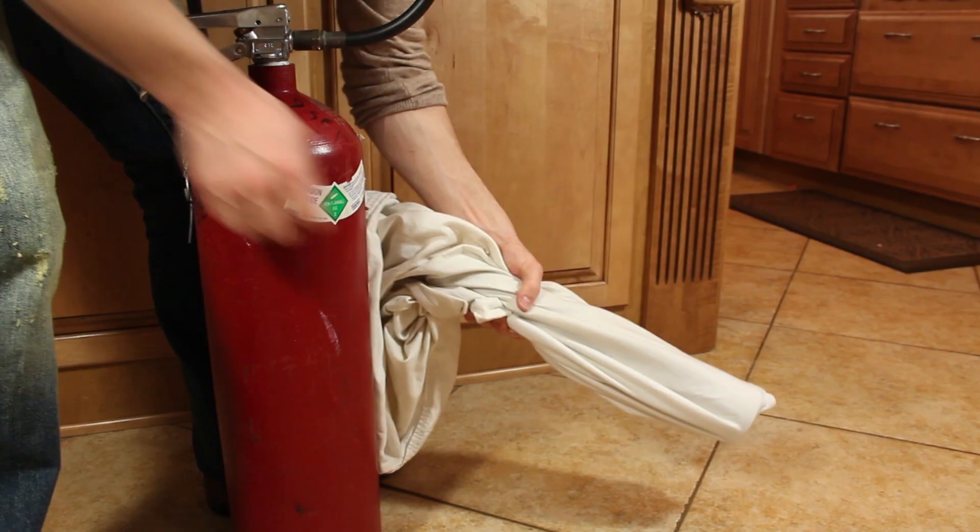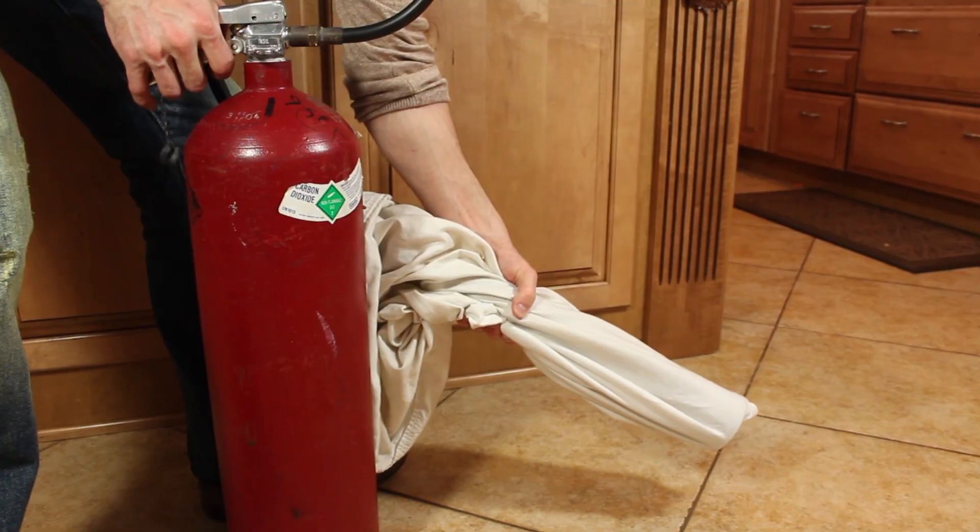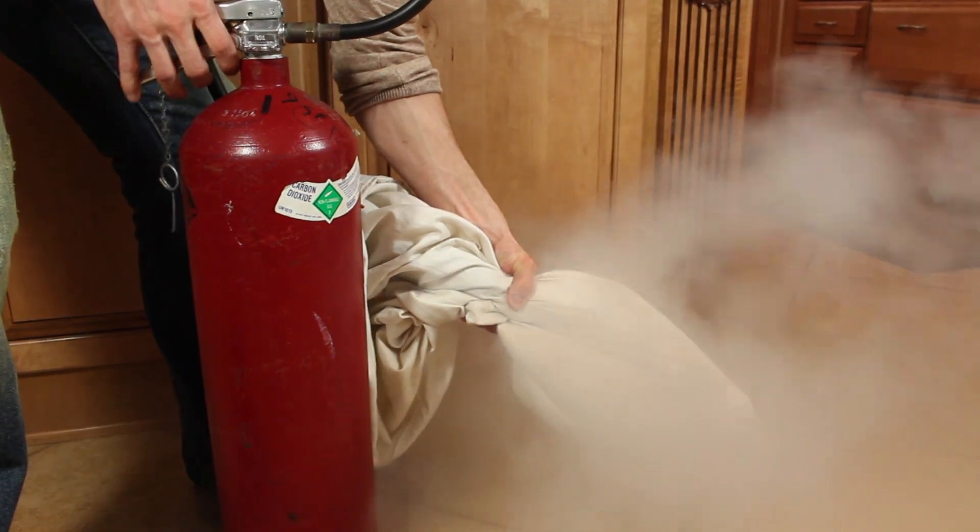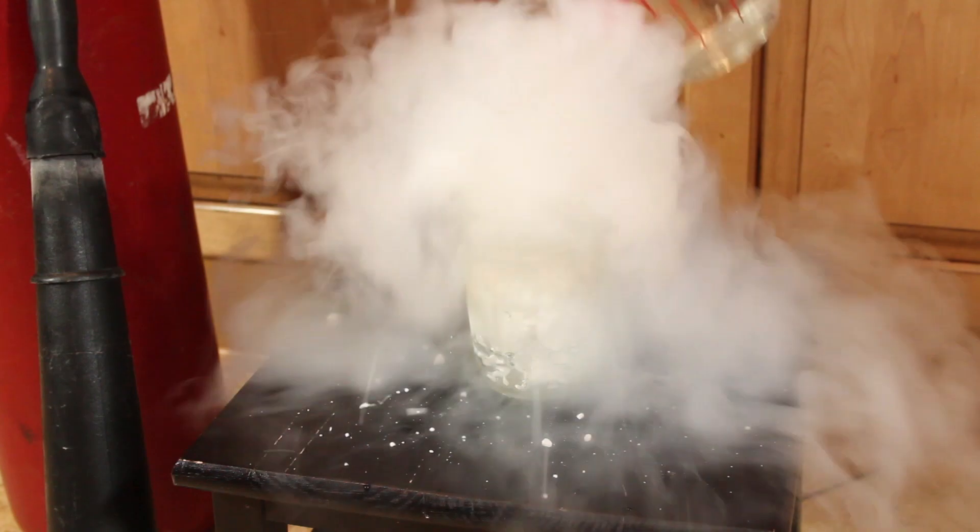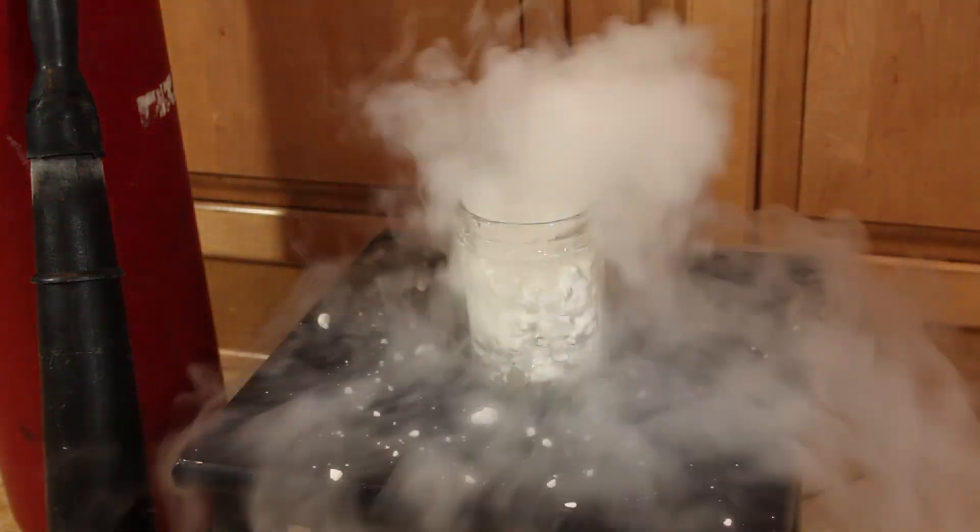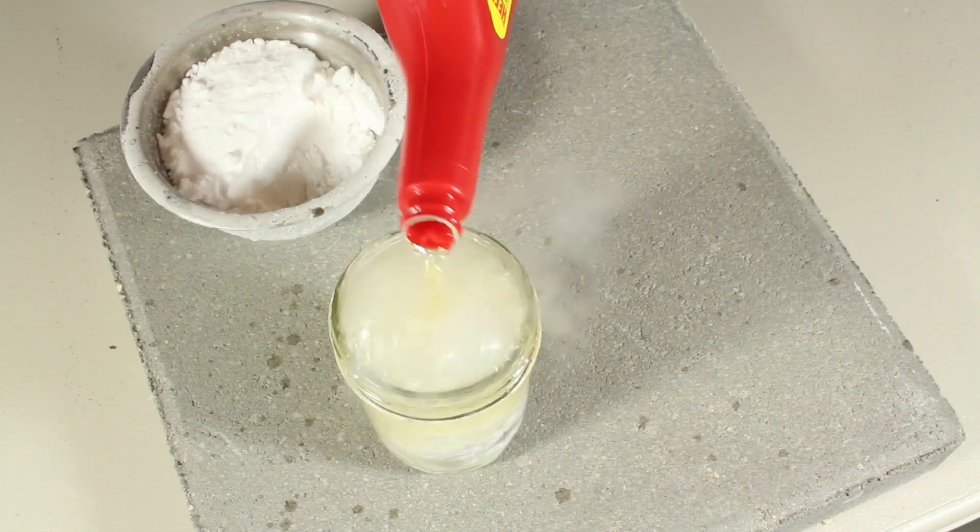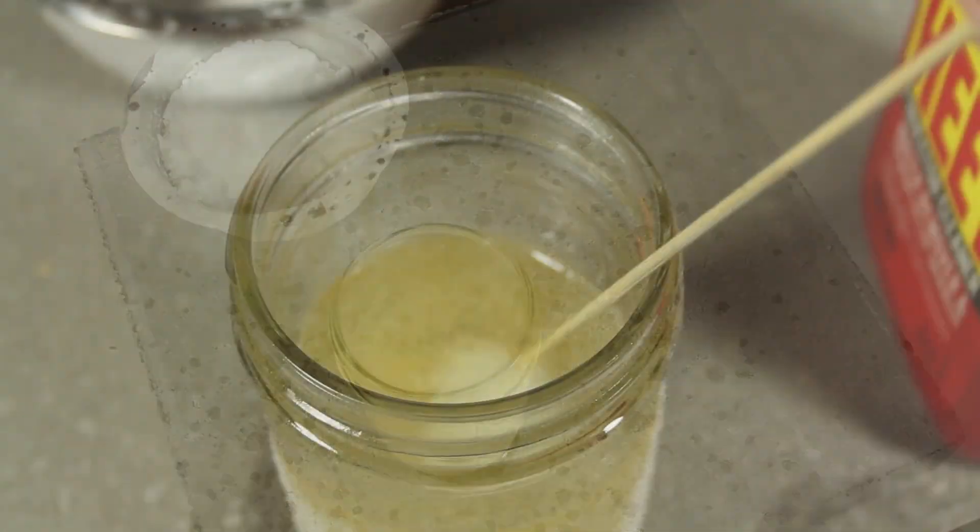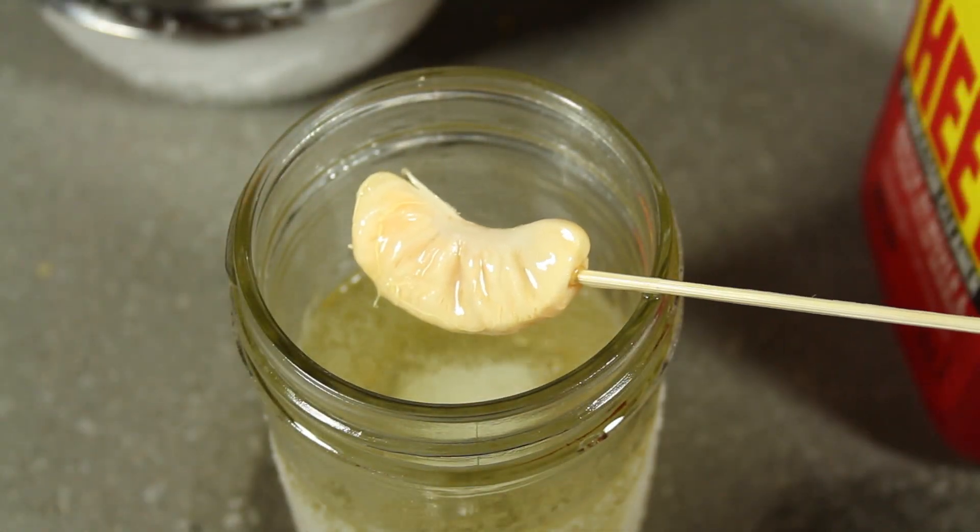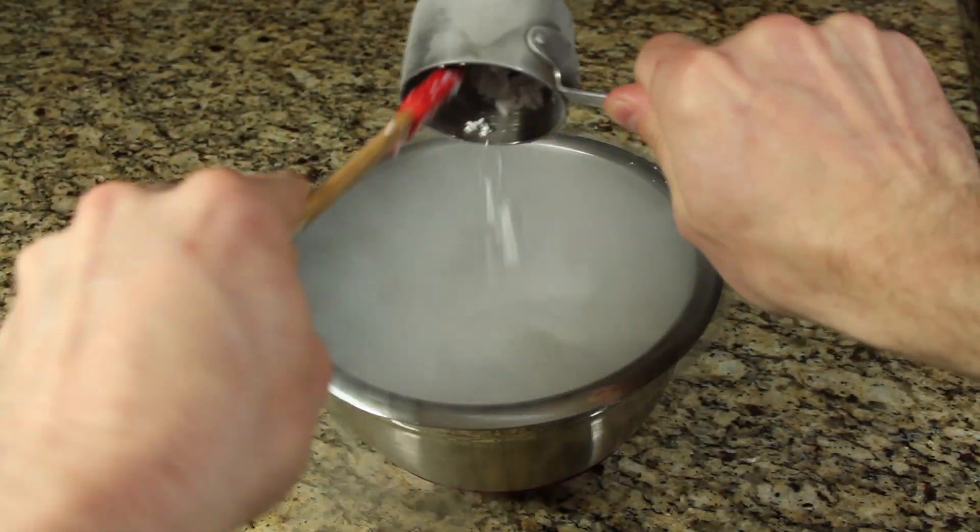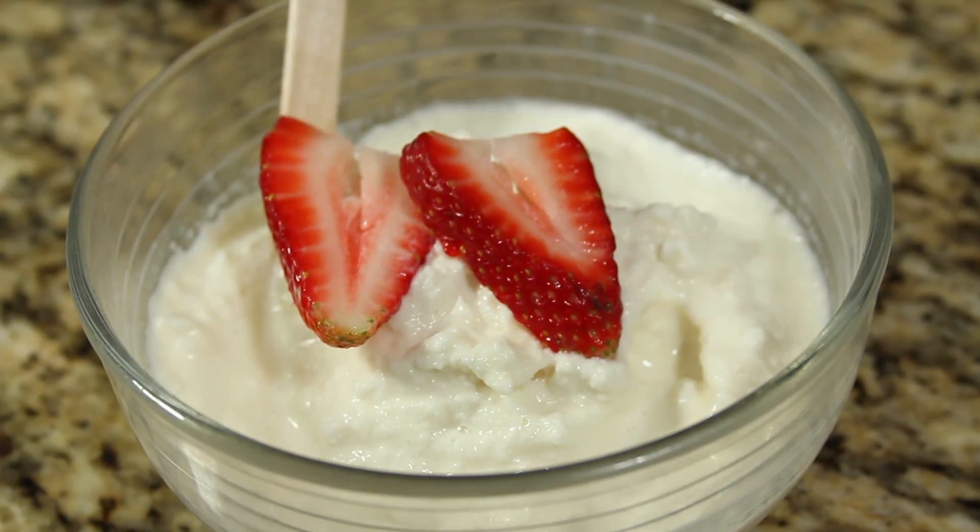Well now you know how to make dry ice whenever you need it, as long as you've got access to a CO2 fire extinguisher. Now making fog is great, but there are crazier things that you can do with dry ice that you'll find in another project. Like making a poor man's version of liquid nitrogen that's cold enough to flash freeze an orange. You'll also see how dry ice is used in making a tasty batch of carbonated ice cream.